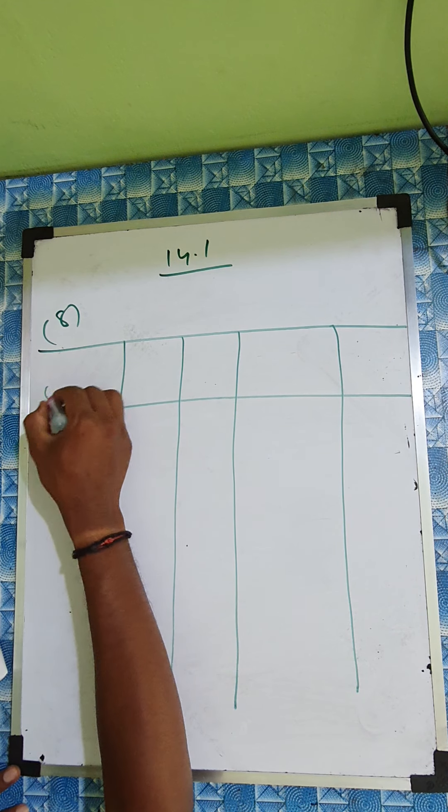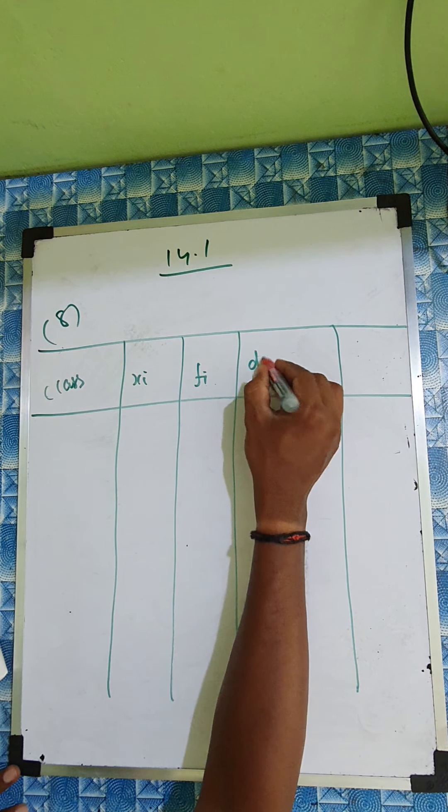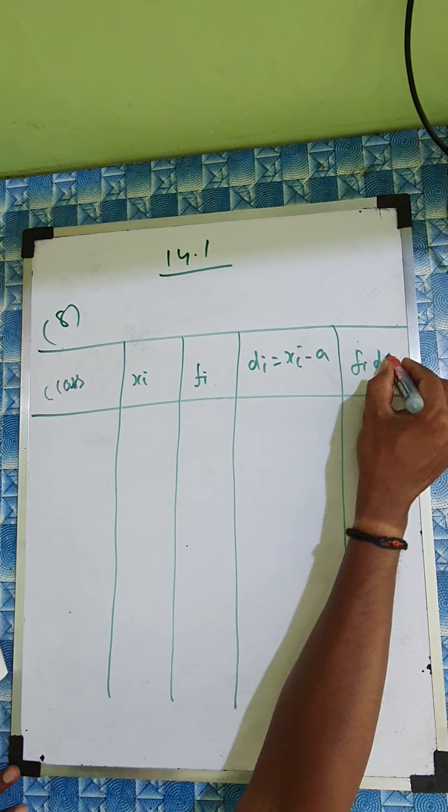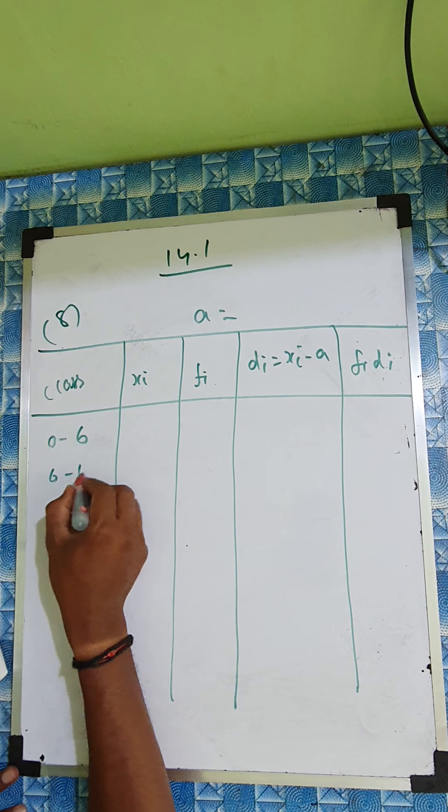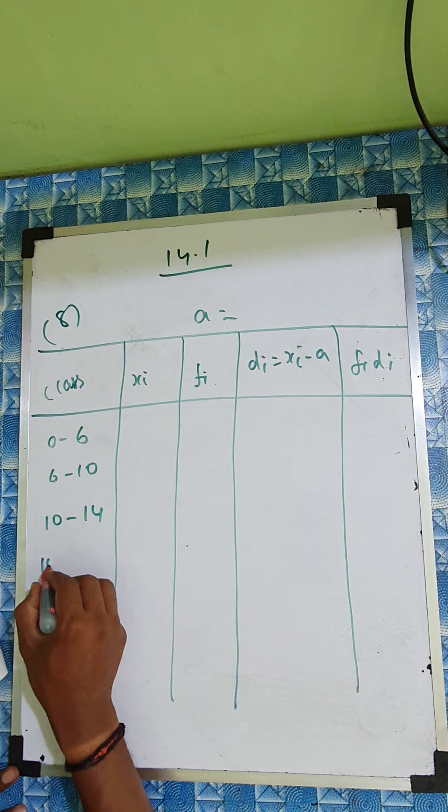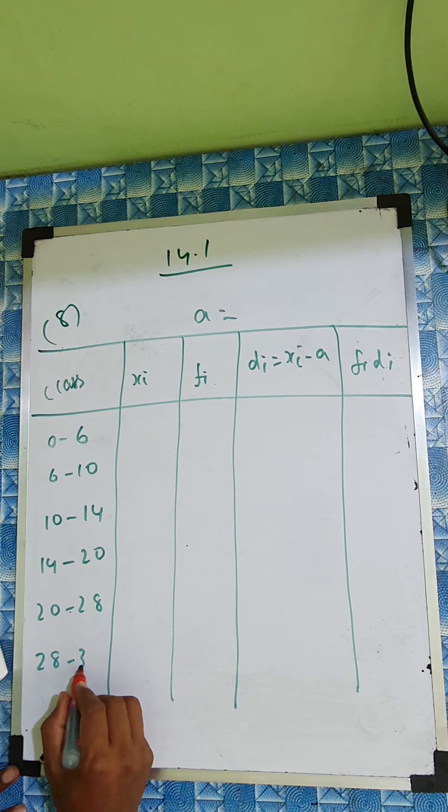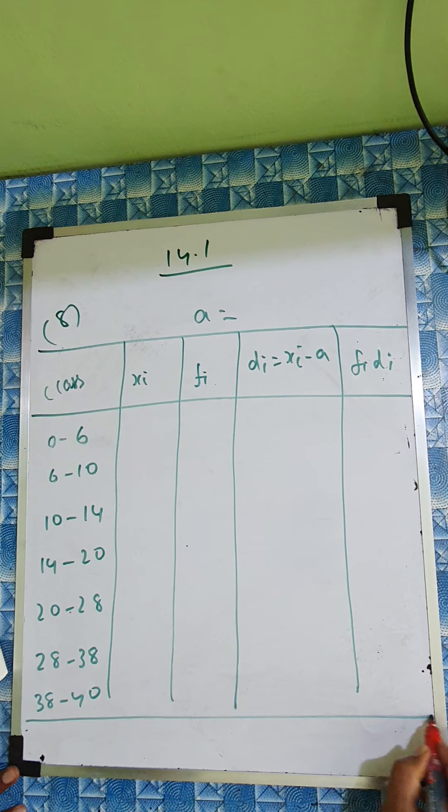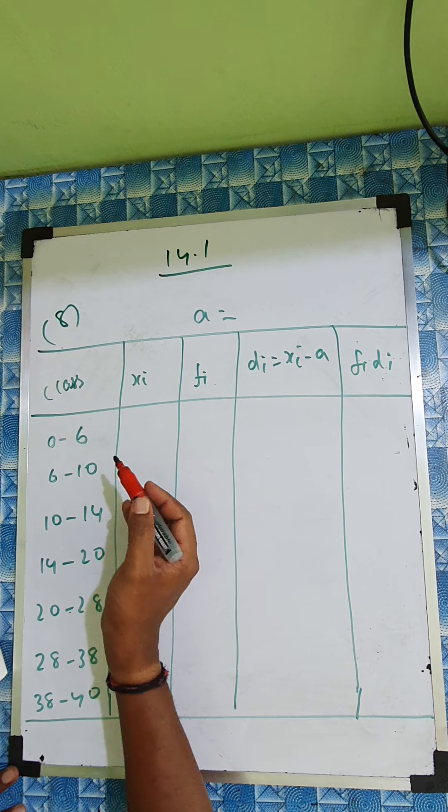So the class, xi, fi, di equal to xi minus a, fi di. So 0 to 6, 6 to 10, 10 to 14, 14 to 20, 20 to 28, 28 to 38, and 38 to 40.